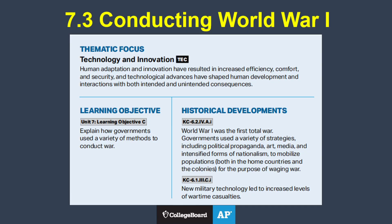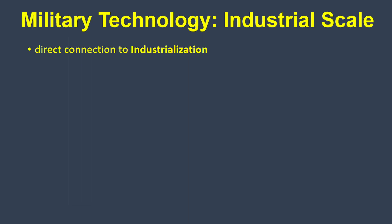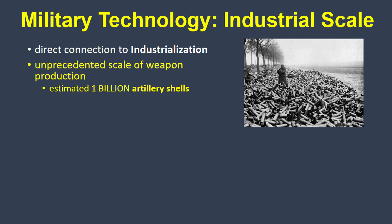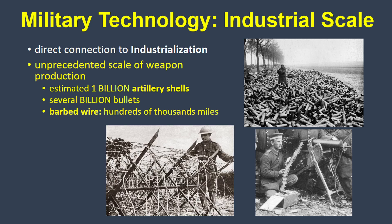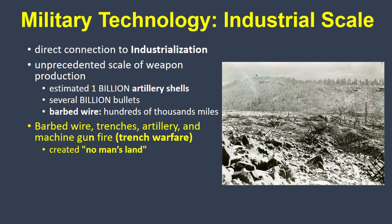Now let's talk about the war itself. Here's the required content for 7.3: Conducting World War I. Let's start with military technology, which made the war especially deadly. This is connected to industrialization, since the great powers involved were able to produce weapons at an unprecedented scale. An estimated 1 billion artillery shells were used in the conflict, and several billion bullets. Several hundred thousand miles of barbed wire was also used to prevent enemy advances, which combined with trenches, artillery, and machine gun fire created a killing zone called No Man's Land, where waves of soldiers were annihilated before even reaching their enemy.